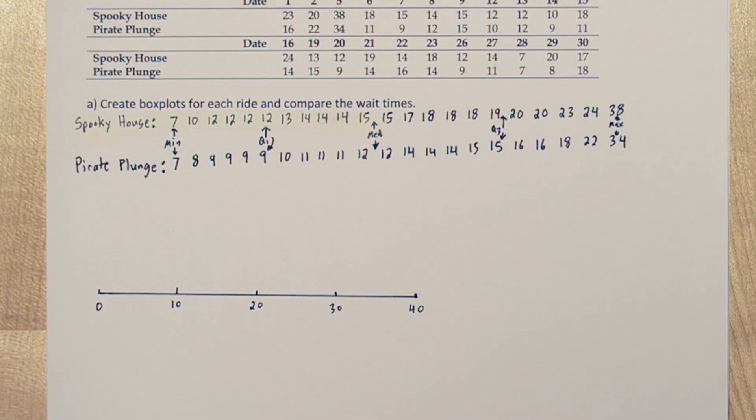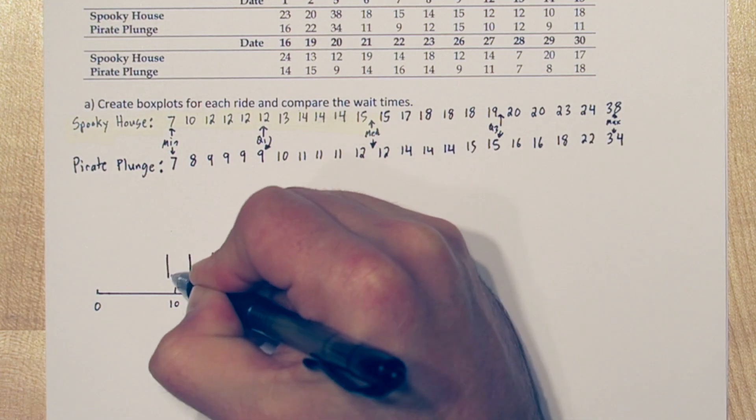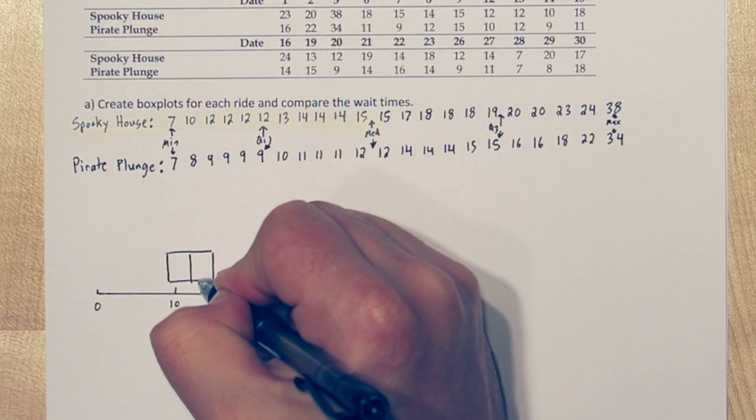Start by drawing small vertical lines at the quartile 1, median, and quartile 3 values. So 9, 12, and 15. Now connect those lines.